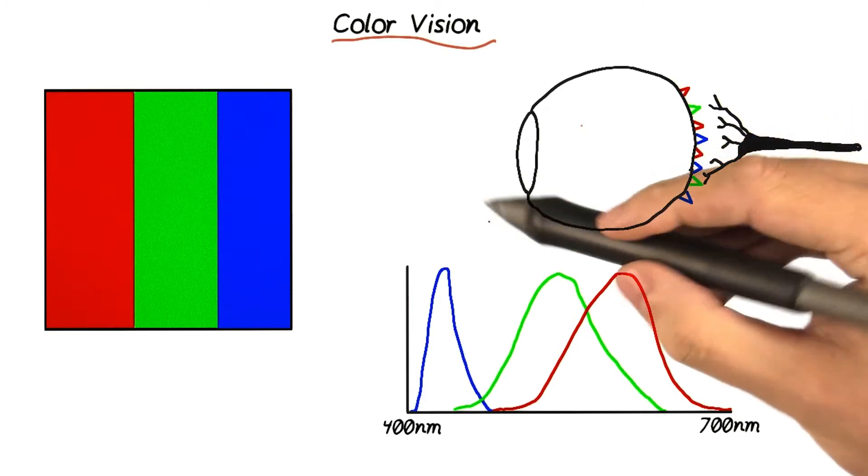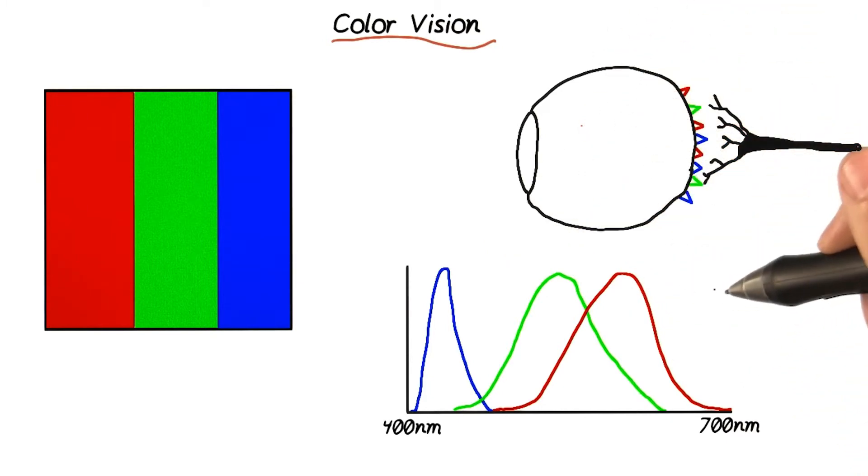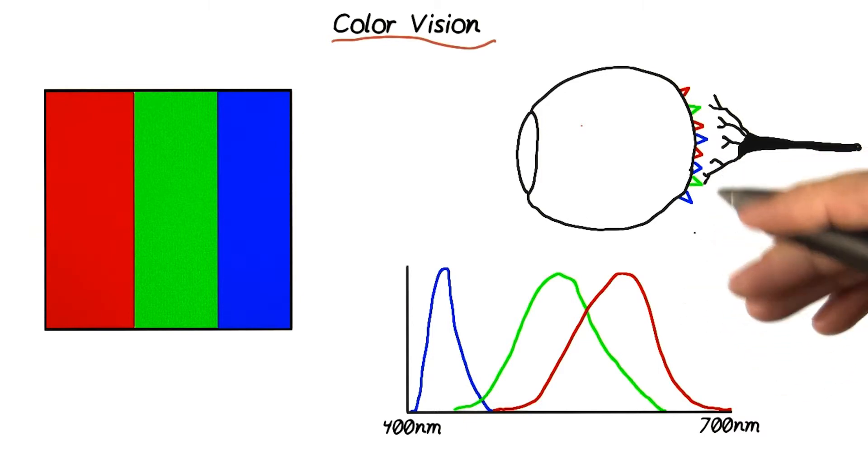Since red, green, and blue light each directly stimulate one of the types of cone cells, this means we can simulate any other color by replicating how that color would stimulate the cone cells.